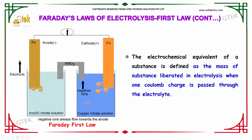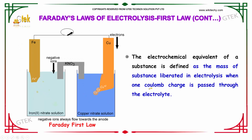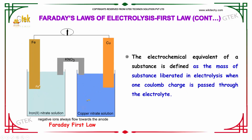The electrochemical equivalent of a substance is defined as the mass of the substance liberated in electrolysis when one coulomb of charge is passed through the electrolyte. This is Faraday's first law of electrolysis.